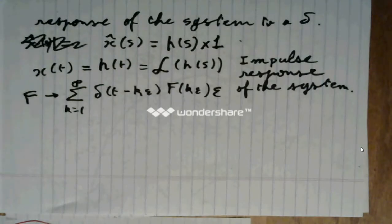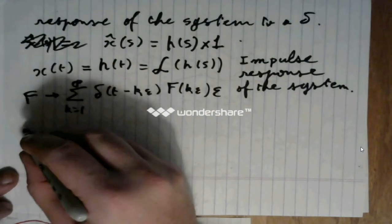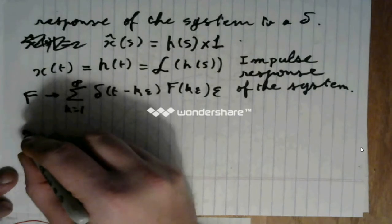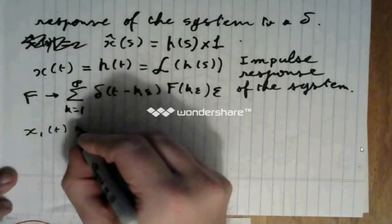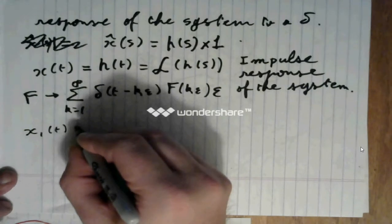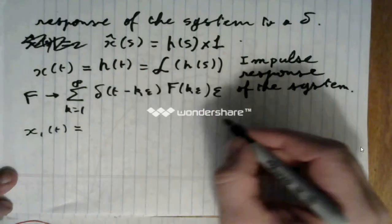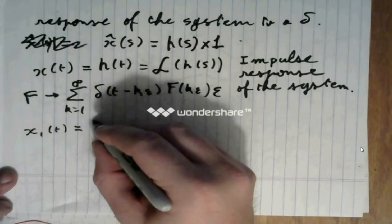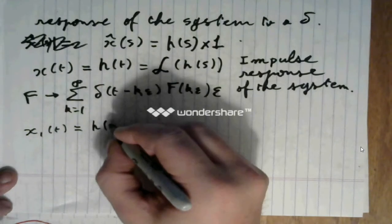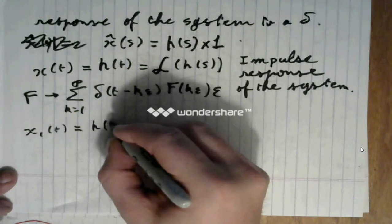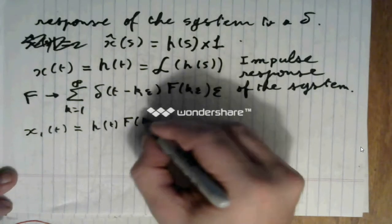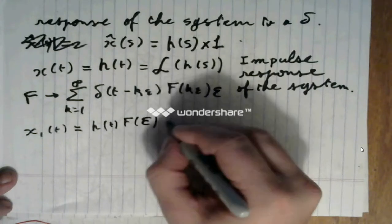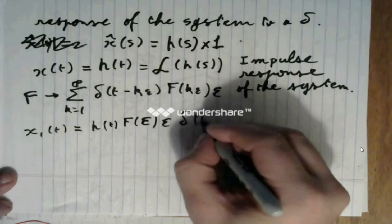Therefore, what we will get is that the response, which I will call x1 of t, to the first component of f, will be simply h of t times f of 1 times epsilon times epsilon.